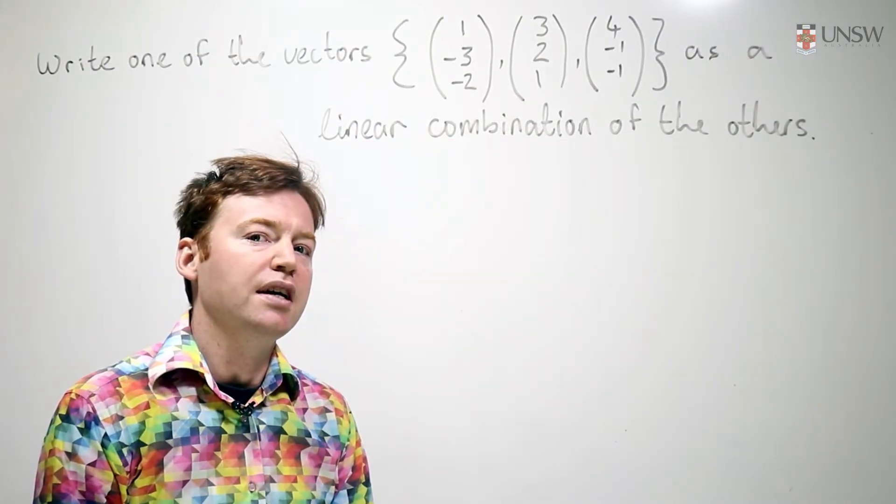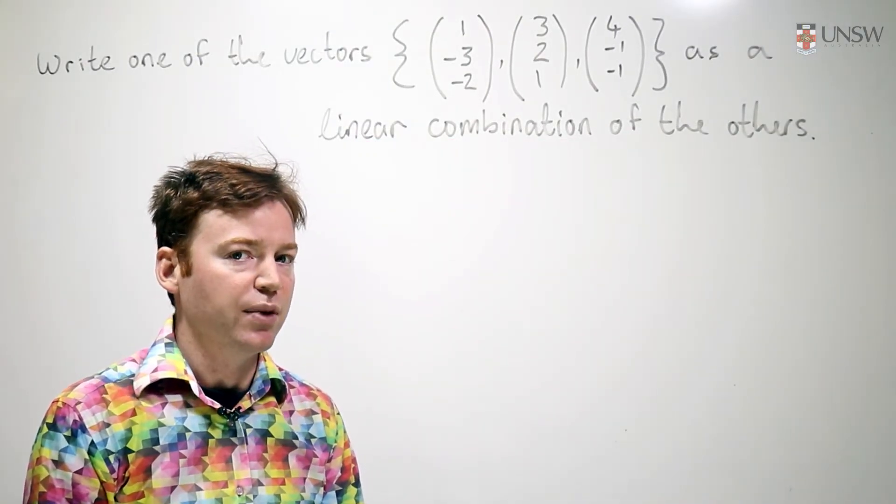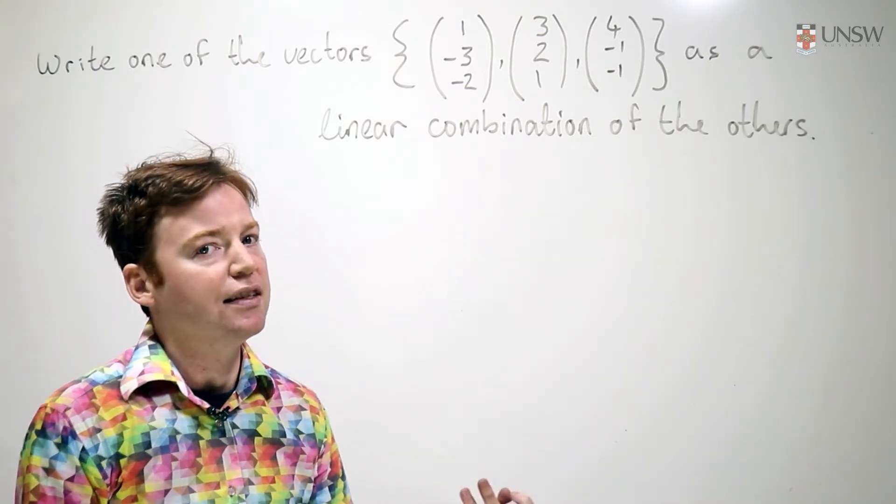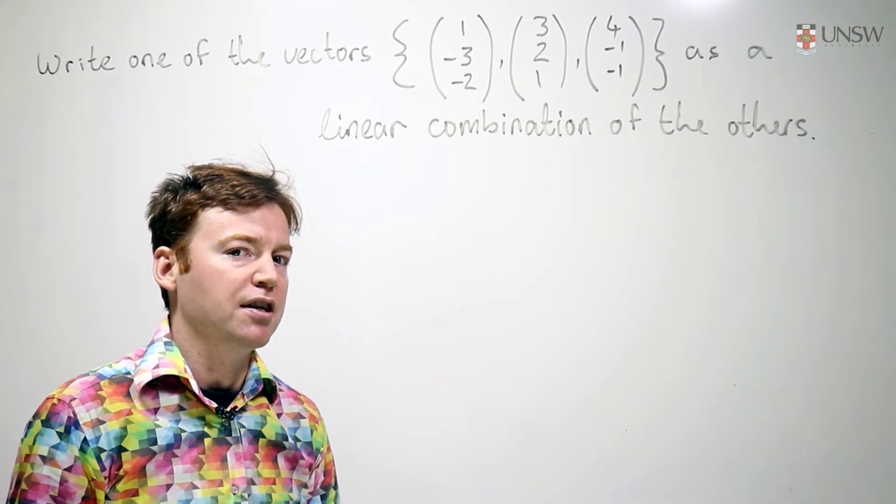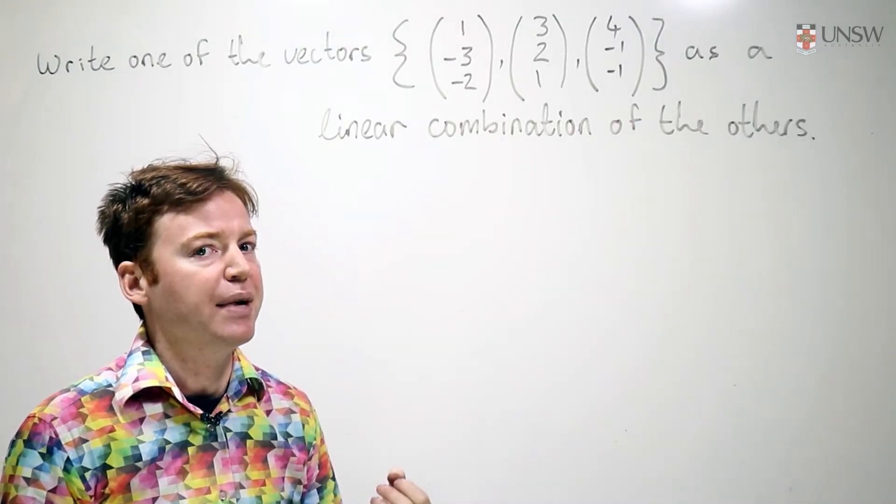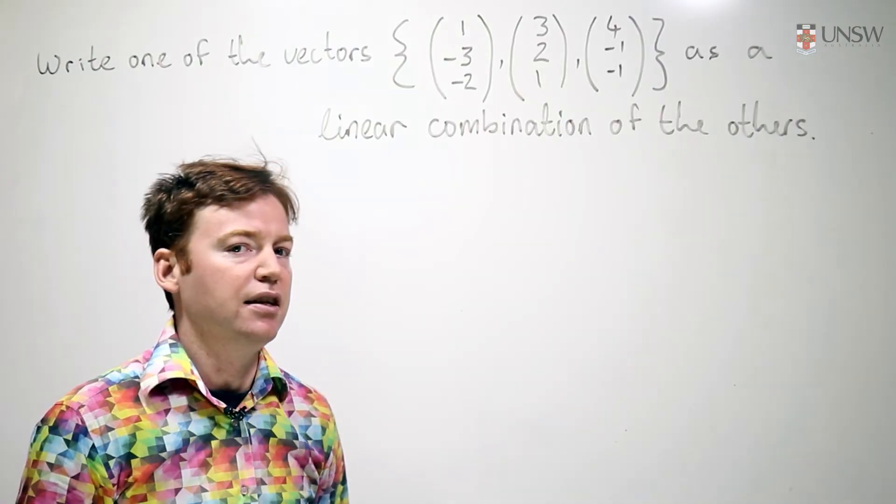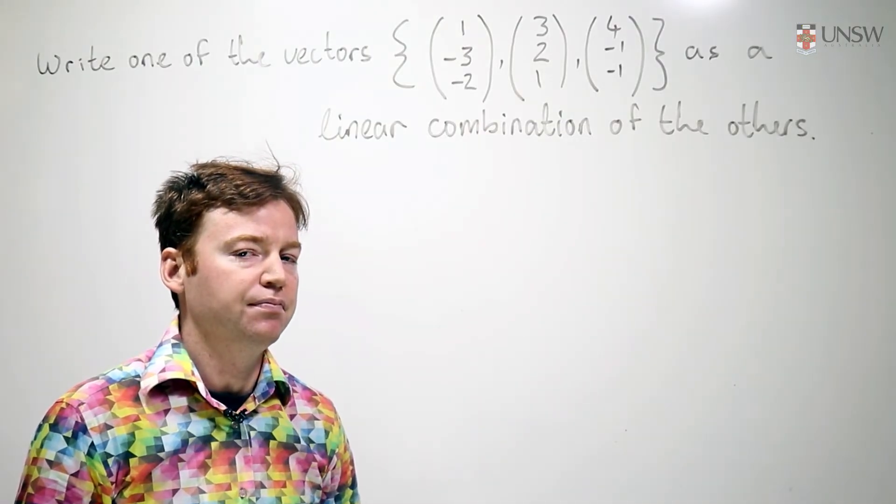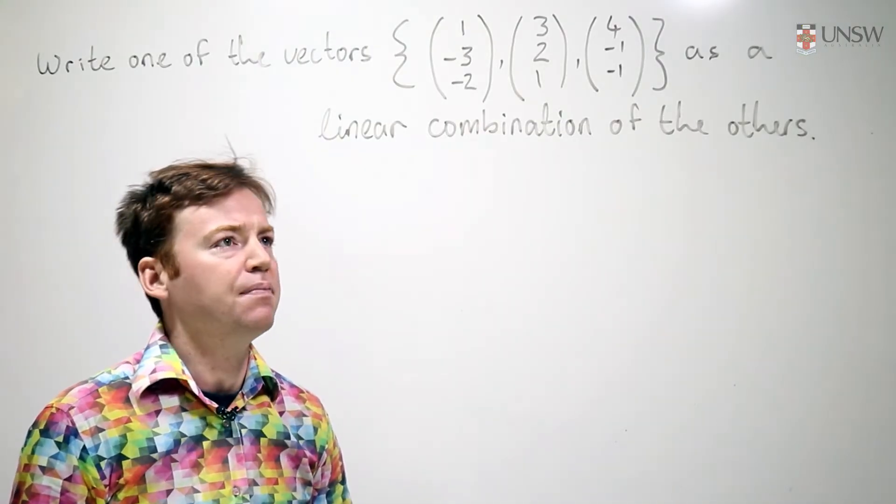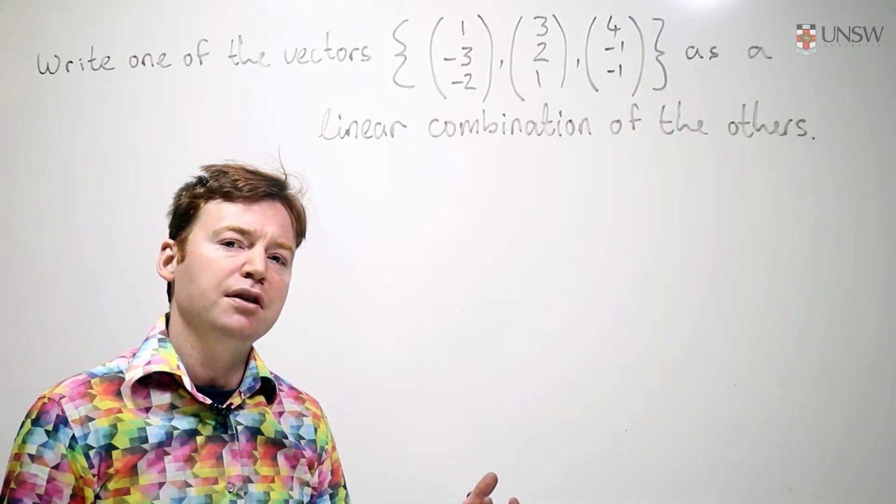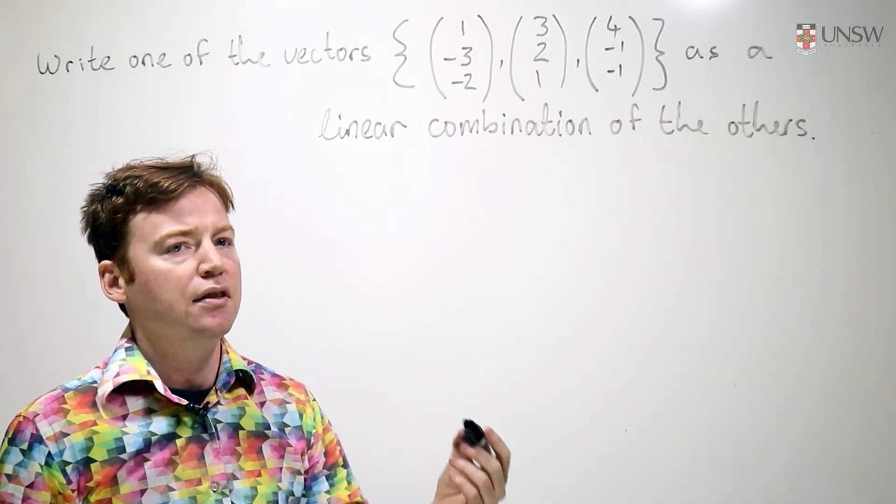Now that we know the set is linearly dependent, we can write one of the vectors as a linear combination of the others. And this exactly characterizes the notion of linear dependence. You can always write one of the vectors as a linear combination of the others. So let's see how we can do that. Remember, in the previous part of this question, we were solving the equation.